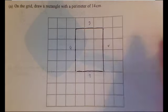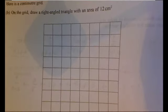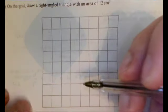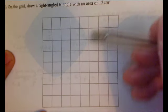Okay, and let's look at the next question. We've got to try and make a right-angled triangle, so we'll have a 90 degree angle there, and it's going to have an area of 12 centimetres squared. Well, I know that the area of the triangle is half times the base times by the height.